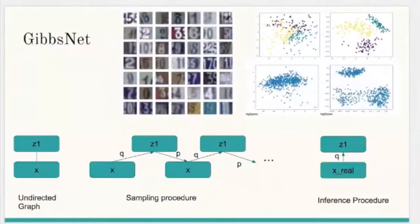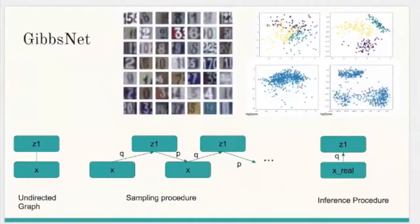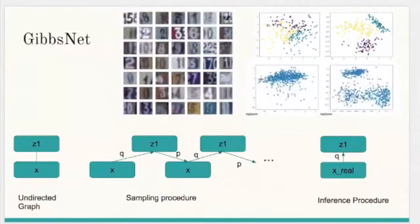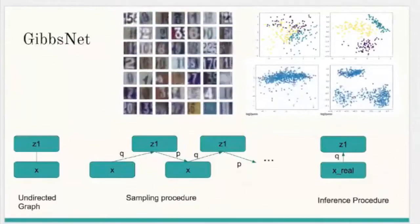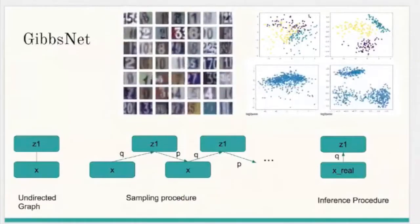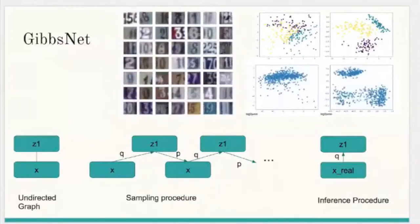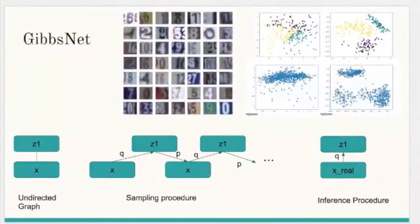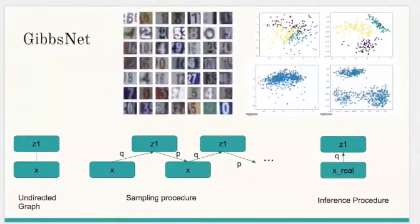We propose a novel approach to learning the joint distribution between the data and a latent code which uses an adversarially learned iterative procedure to gradually refine the joint distribution P(X,Z) to better match with the data distribution on each step.